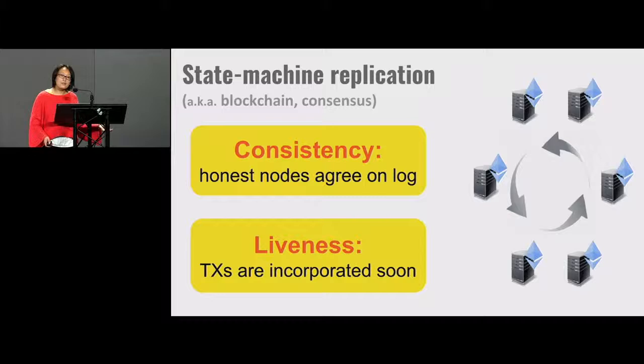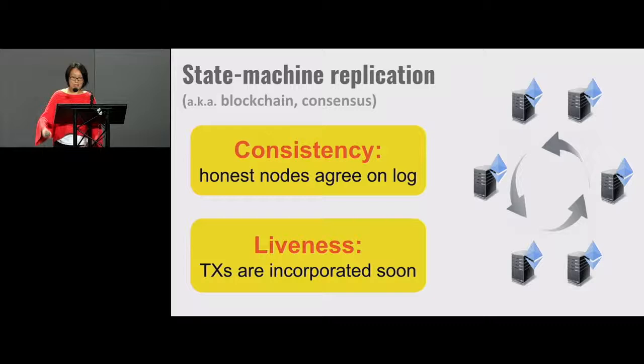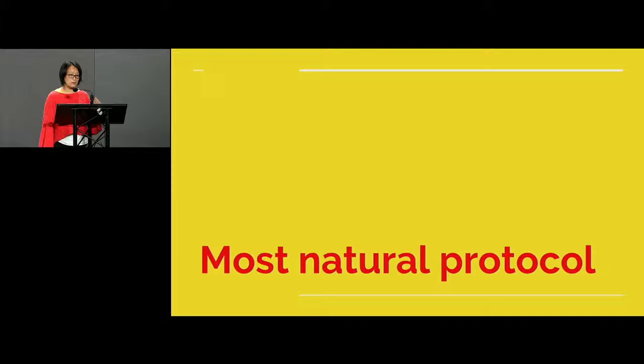If all nodes were honest and correctly follow the protocol, the problem would be trivial and uninteresting. What makes this problem exciting is when some nodes can be corrupt. These corrupt nodes can behave arbitrarily, deviating from the prescribed protocol. Even under such adversarial conditions, we want to make sure the remaining honest nodes satisfy these two important security properties.